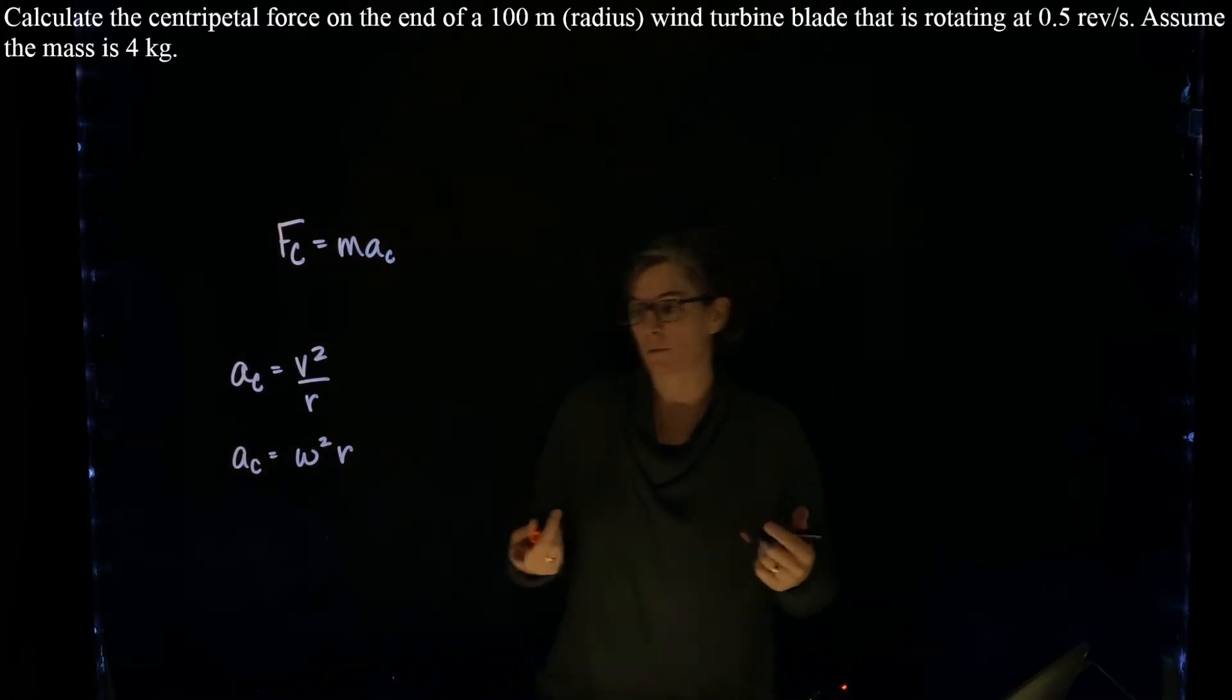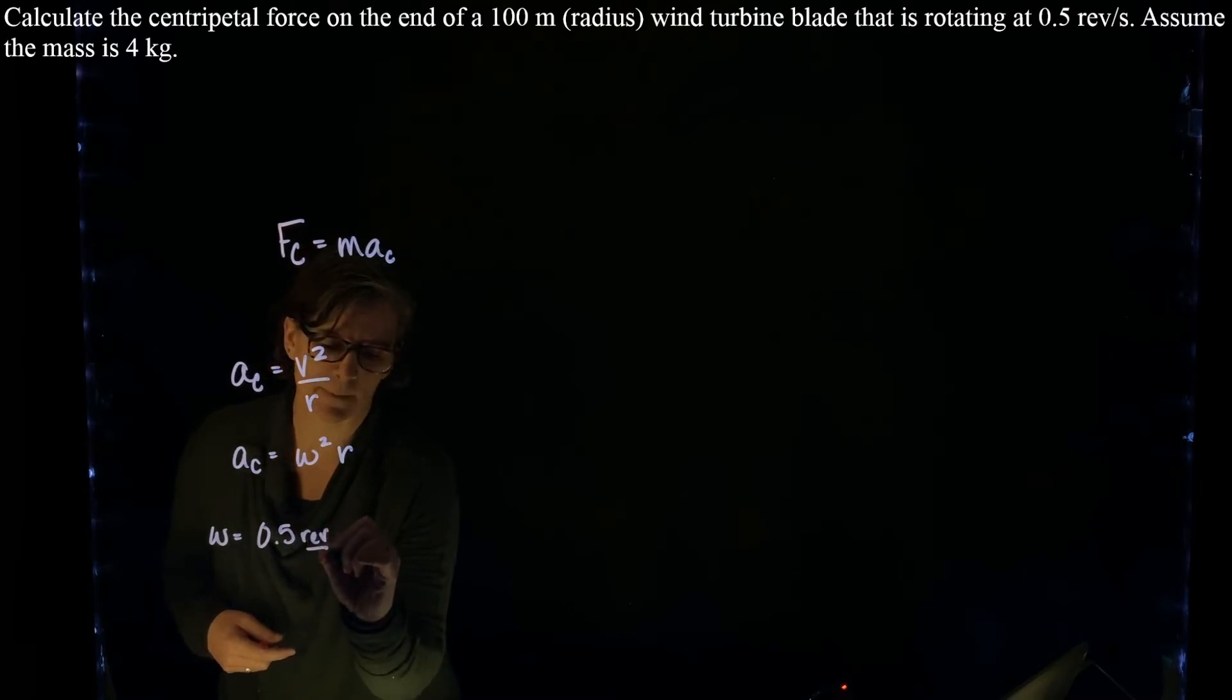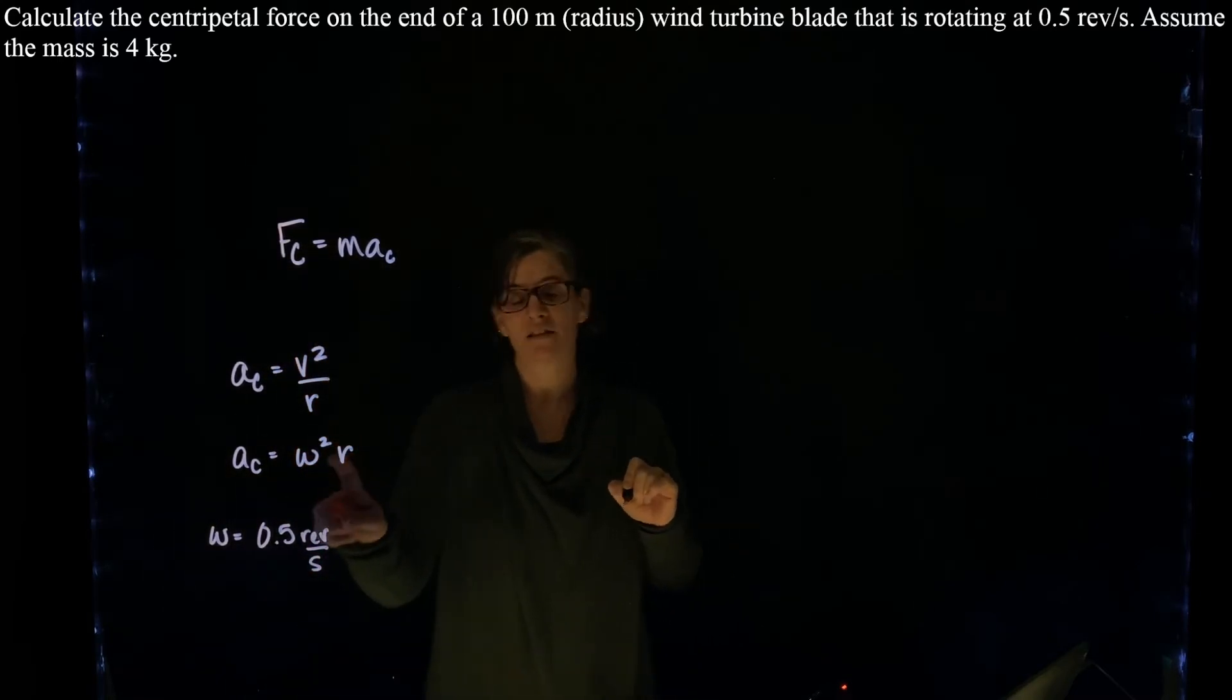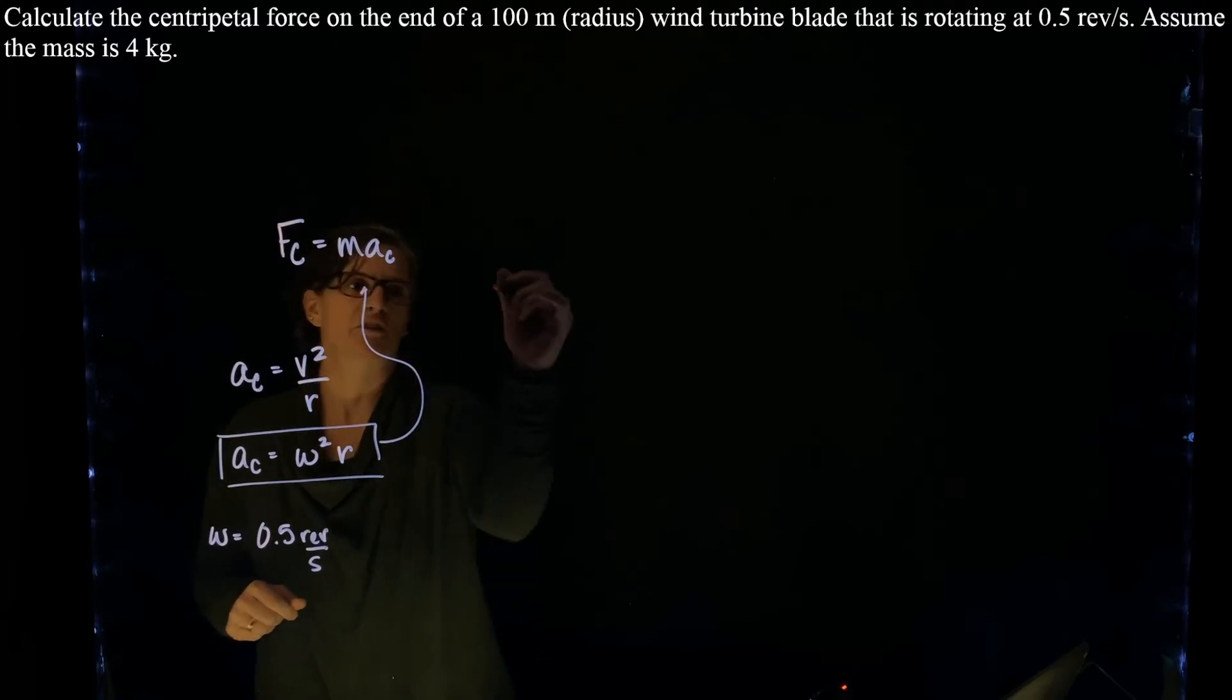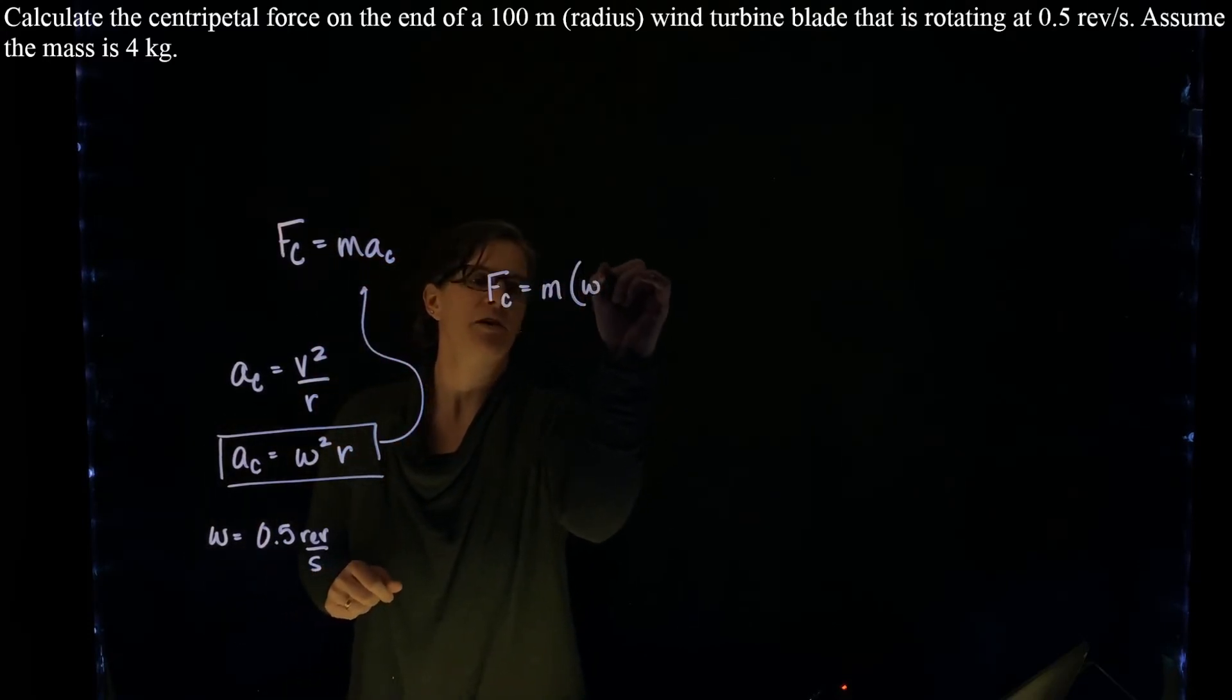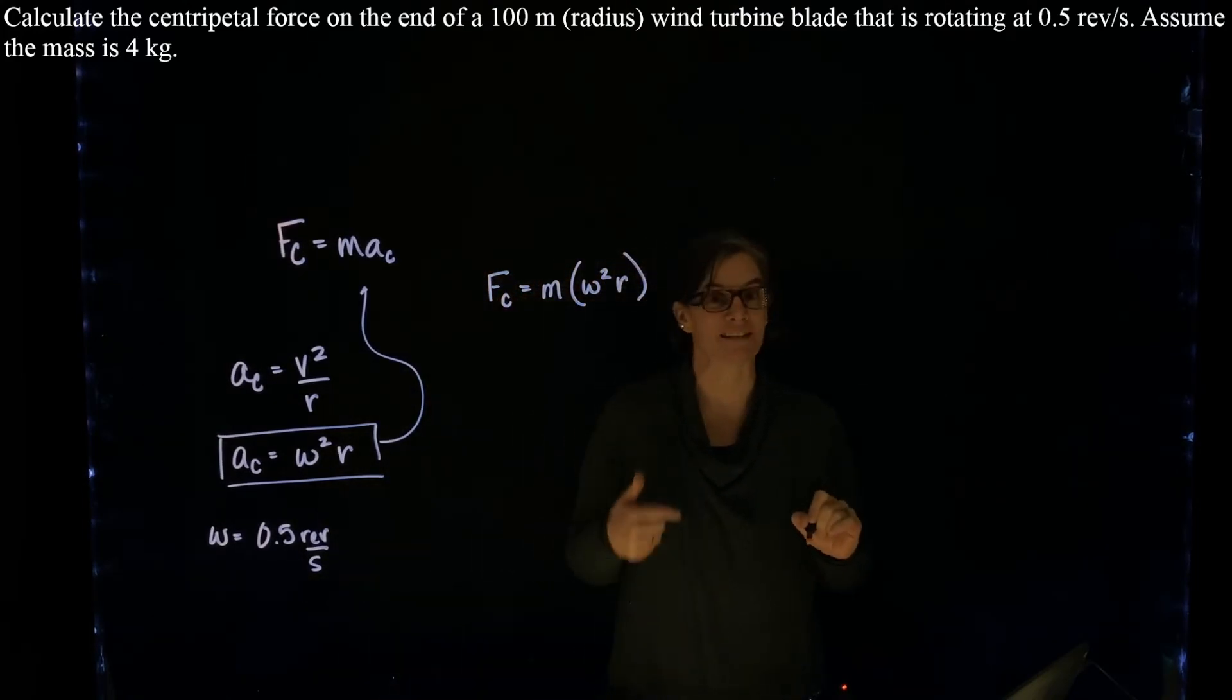In this example, we're told that the angular speed is rotating at 0.5 revolutions per second. But in this relationship, if we're going to use this second relationship to determine the centripetal force, such that we have mass times omega squared r, we need that angular velocity in radians per second.